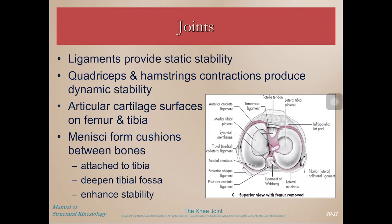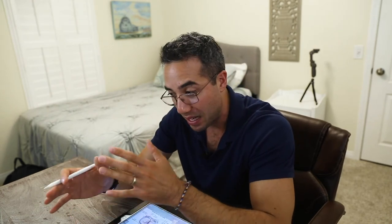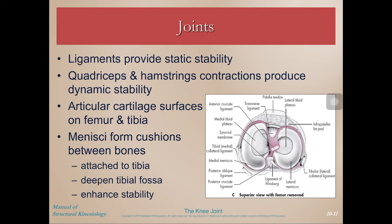The knee is supposed to be highly stable, but it's subject to a lot of extraneous forces from poor movement patterns, high velocity, or erratic movements. It does have a lot of ligamentous support as well as muscular support. Ligaments provide static stability, whereas musculature provides dynamic stability. We can't necessarily improve the static stability of ligaments, but we can train the muscles to provide more dynamic stability.